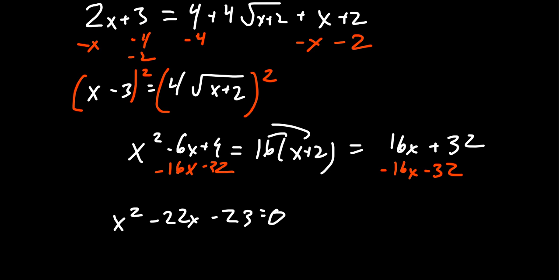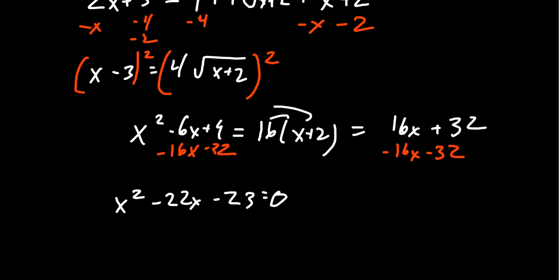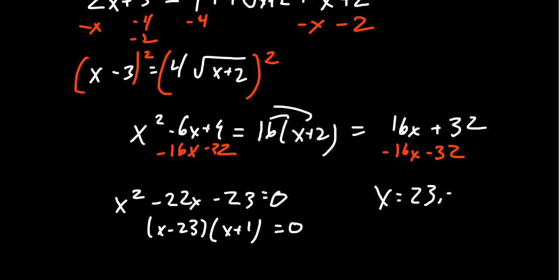We can solve by completing the square or the quadratic formula, but it factors nicely. Factors of negative 23 that add to negative 22 are negative 23 and plus 1. So we get x equals 23 and x equals negative 1 as our potential solutions — but remember, party crashers could be present.